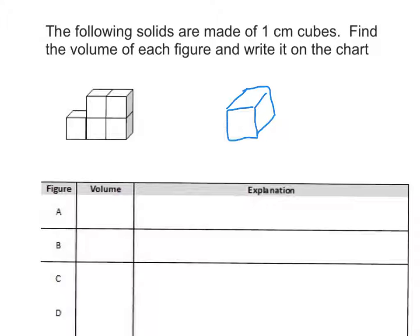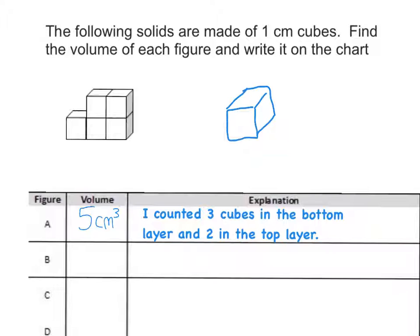In this first example, all we have to do is count the cubes. So we have on the bottom 1, 2, 3 cubic centimeters plus the top gives me 4, 5 cubic centimeters total. My explanation here is I counted 3 cubes in the bottom layer and 2 in the top layer. It doesn't need to be more difficult than that.